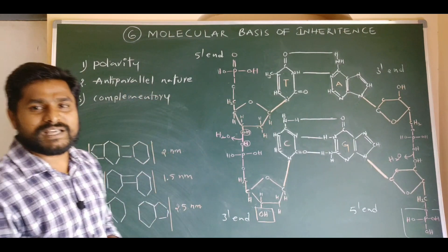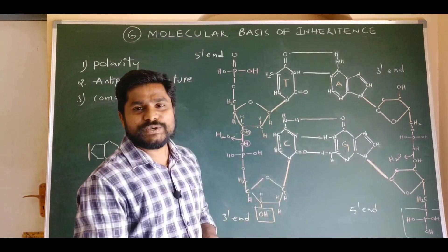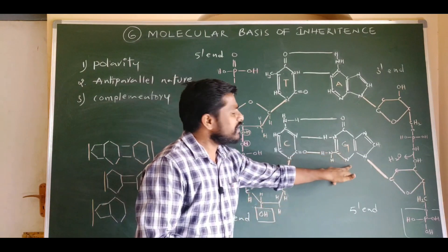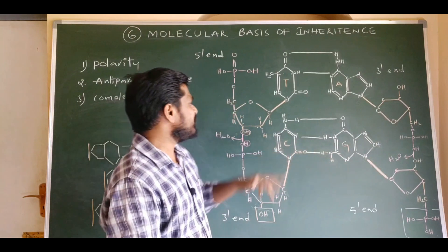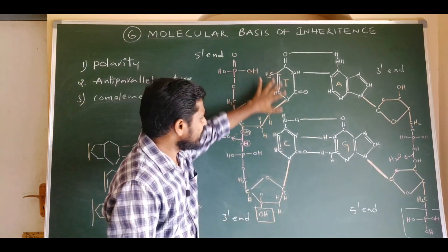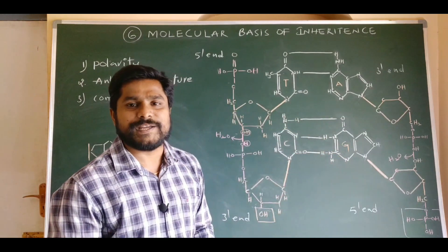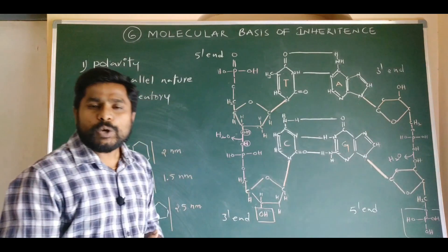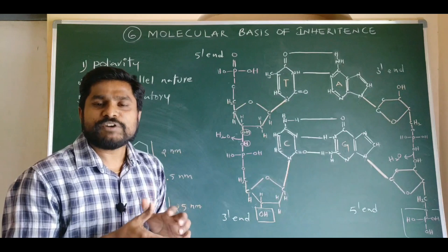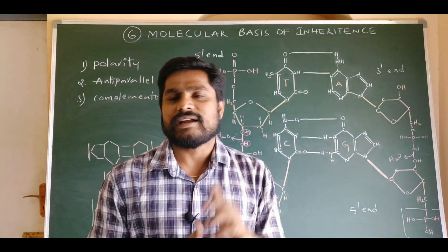The third property is complementarity. According to the rule of complementarity, the adenine nucleotide of one strand must always face the thymine nucleotide of the opposite strand by means of two hydrogen bonds. The guanine nucleotide of one strand must always face the cytosine nucleotide of the opposite strand by means of three hydrogen bonds. If you know the sequence of nucleotides of one strand, you automatically know the sequence of the other. Complementarity is always between a purine and a pyrimidine, not between two purines or two pyrimidines.